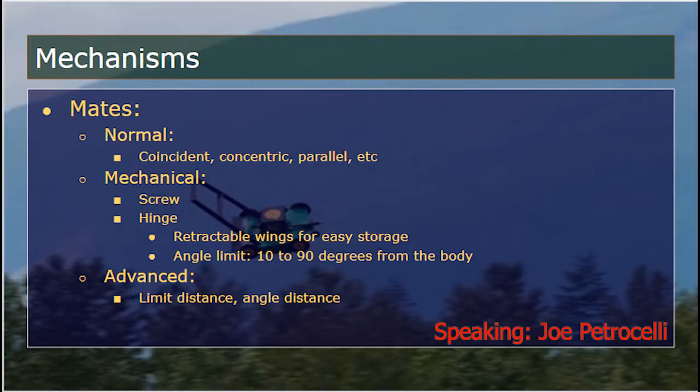In terms of mechanisms and mates for our project, we had quite the variety. Concentric mates were crucial for the motor section of the mower as well as for the wheels. Concentric and coincident mates would make up the majority of the mates. For things such as the wings, handlebar, and bin cover, limit angle mates were used. In terms of mechanical mates, we used hinge mates for the retractable wings. Screw mates could also be used for each of the bolts in the assembly.